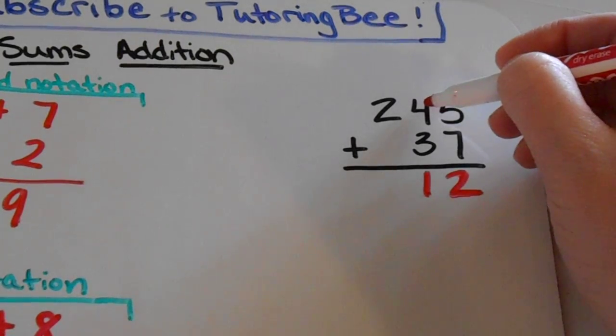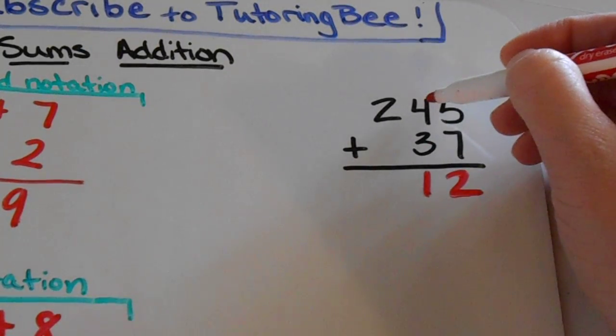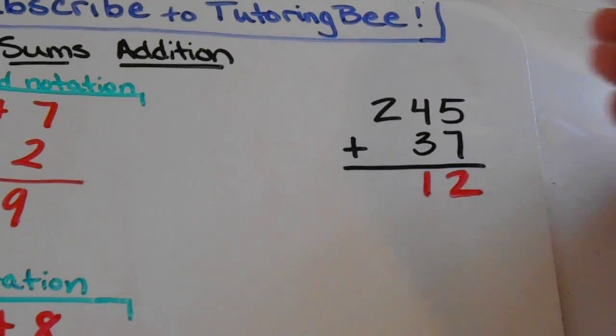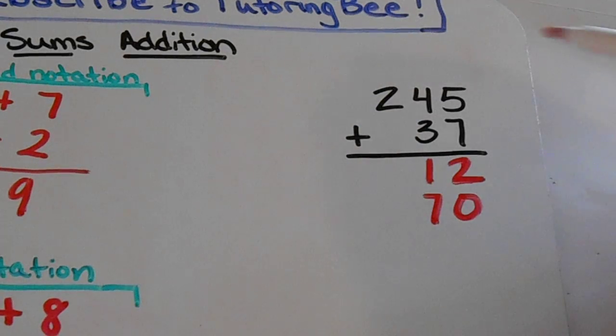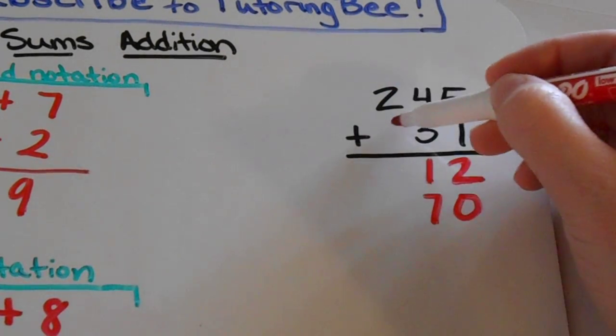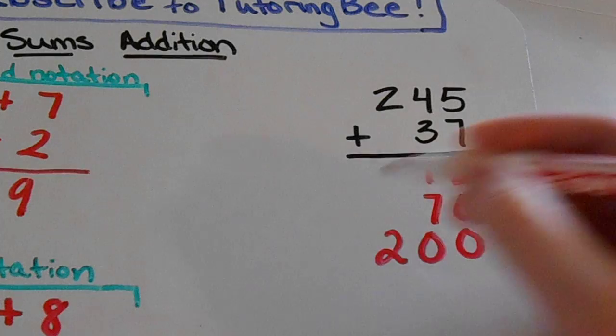Then 40 plus 30, because remember this isn't just 4 plus 3. This is 40 plus 30. 40 plus 30 is 70. And then 2 hundreds plus no hundreds is 2 hundreds.